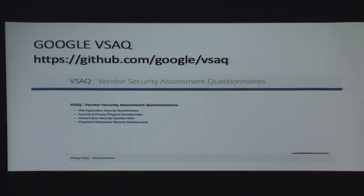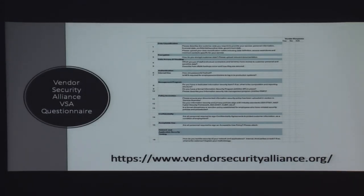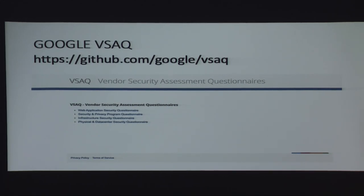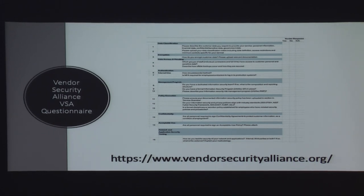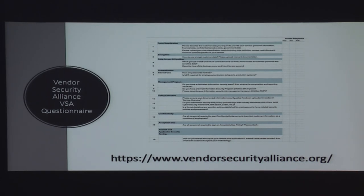There's also the Google VSAQ, hosted on GitHub — basically essay questions you fill in, asking about things like cross-site scripting controls. There's also the Vendor Security Alliance questionnaire, also called VSAQ, which is super similar with a lot of the same types of questions, though the company that runs it does a lot of marketing with your information — I once let my browser autofill my Google Voice number and got a ton of phone calls from them wanting to talk about vendor security. Not a fan of doing it with marketing companies.